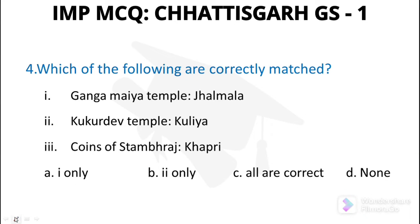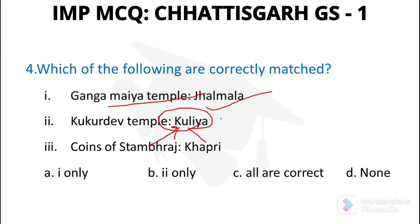Question number 4: Which of the following are correctly matched? The first type of Ganga is in Jhalmala, Balor. Kukur Deo temple, Khappari, and coins of Stambhraj are the other options. Only option 1 is correct, so the answer is A — one only.